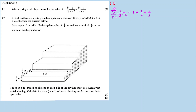Continuing the expansion: 1 over 4, plus 1 over 4, plus 1 over 4 — wait, that gives us 1 plus 1 over 2 plus 1 over 3 plus 1 over 4. We keep going — 1 over 5, 1 over 6, 1 over 7 — expanding all the way up to y equal to 10.